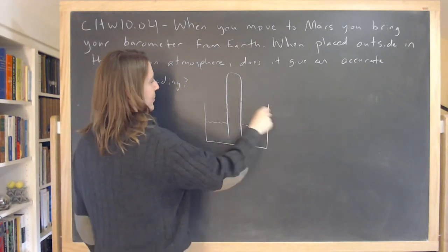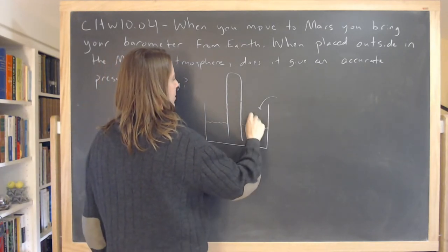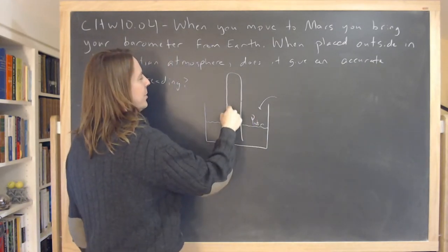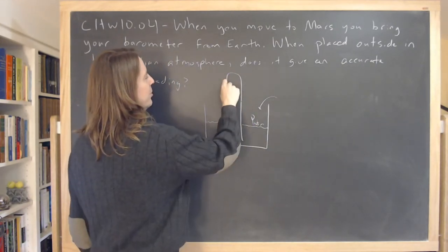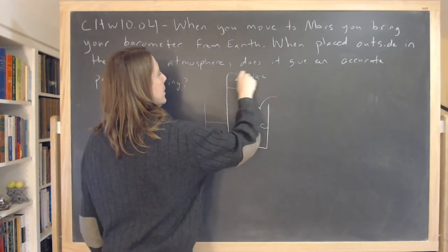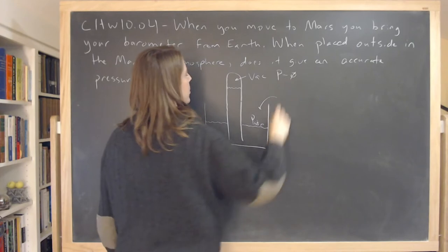happens is the atmospheric pressure will push down on the barometer and the fluid will go up, and it'll go all the way up. That's why you end up with a vacuum in here, so the pressure equals zero in